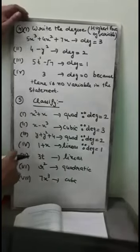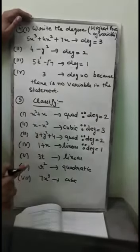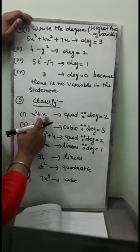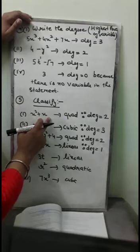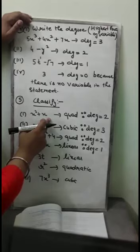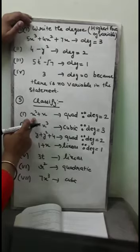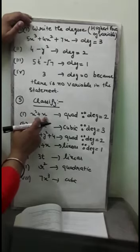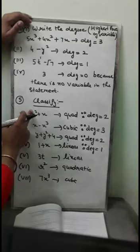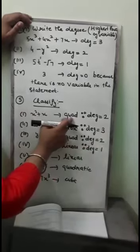In sum number 5, you are asked to classify the given polynomials as quadratic, cubic, or linear. If degree is 2, it is quadratic; if degree is 1, it is linear; if degree is 3, it is cubic. In the first part, x squared plus x has degree 2, so it is quadratic. In the second part, x minus x cubed has degree 3, so it is cubic.